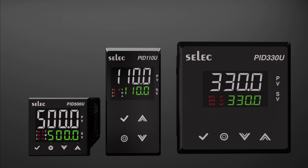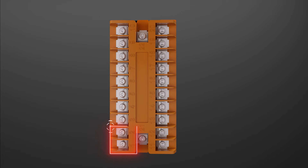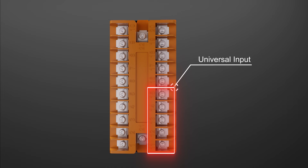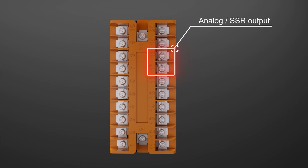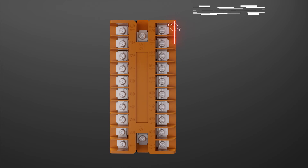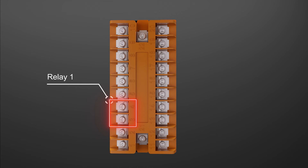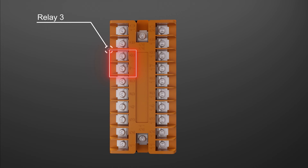These universal PID controllers are available in different sizes, making it feasible for the user to select according to panel cutout. For PID 110U: Terminals 1 and 2 for auxiliary supply. Terminals 11, 12, 13, 14, and 15 for universal input. Terminals 17 and 18 for analog current, voltage, or SSR output. Terminals 19 and 20 for RS-485 Modbus communication. Terminals 9 and 10 for inbuilt sensor supply — 24V DC. Terminals 3 and 4 for relay 1 output. Terminals 5 and 6 for relay 2 output. Terminals 7 and 8 for relay 3 output.